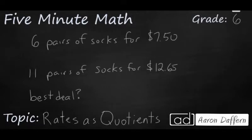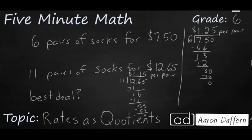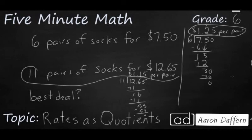Now it's time for you to try. Let's say you're looking for socks. You can either get six pairs for $7.50 or 11 pairs for $12.65. Which of those two is the best deal? Go ahead and pause the video and work it out. When you think you have your answer, unpause it and check your work. The first deal costs $1.25 per pair of socks, but the second deal is cheaper. It costs only $1.15 per pair.